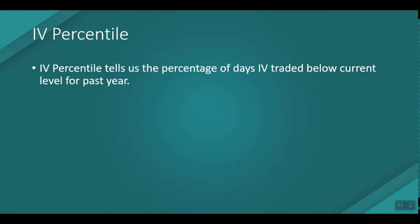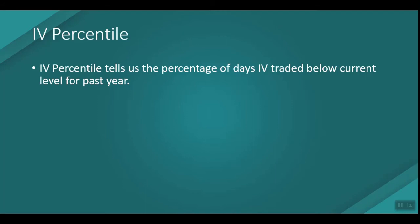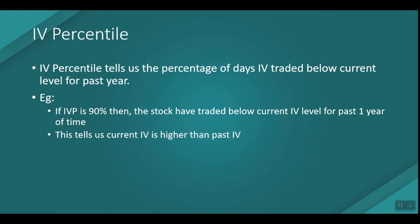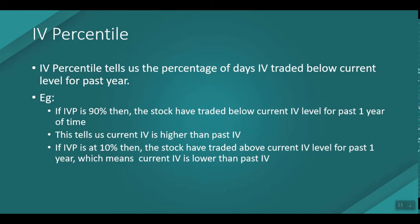The next concept is IV Percentile. IV Percentile tells us the percentage of days the IV has traded below the current level over the past one year. For example, if the current IV is at 60 and the IV Percentile is 90%, it means the stock has traded below this current IV level for 90% of the days in the past year — indicating the current IV is higher than historical IV. Conversely, if IV Percentile is 10%, the stock has traded above the current IV level most of the time, meaning the current IV is lower than historical IV.